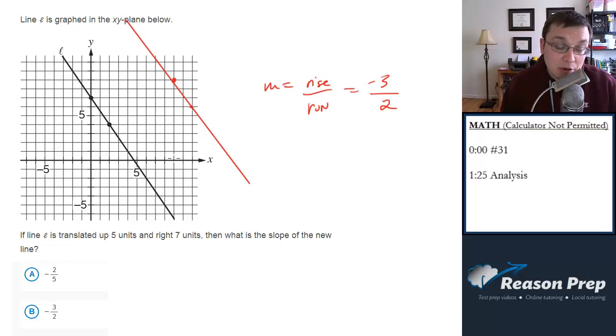Notice when I drew this line in, it's not essentially—it is parallel to our original line. Moving this line around, translating it, does nothing to the slope. The slope of our new line is going to be the same as the old, so it's going to be choice B, negative 3 halves.